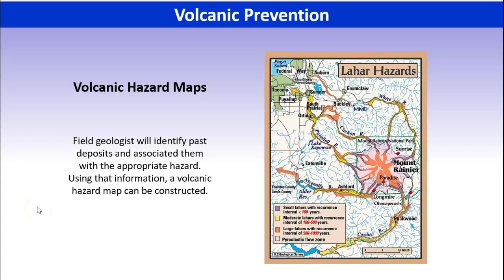The other thing we can do to minimize damage is make some maps. Where are the hazards if there was to be an eruption? Here's an example of where lahars might be. If you live in any of these areas, you want to be aware that that's a hazard you might experience during an eruption. If we make these hazard maps, then we can get people prepared — you are in a hazard zone, so if there's an eruption, you have to have a plan.